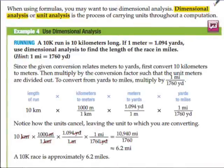When using formulas, you may want to use dimensional analysis. It's the process of carrying units throughout a computation. And the way that works or the way that looks in a problem is this. A 10K run is 10 kilometers long. One meter is 1.094 yards. Use dimensional analysis to find the length of the race in miles. This is really just conversion. The given conversion relates meters to yards. So first convert 10 kilometers to meters. Then multiply by the conversion factors such that the unit meters are divided out.